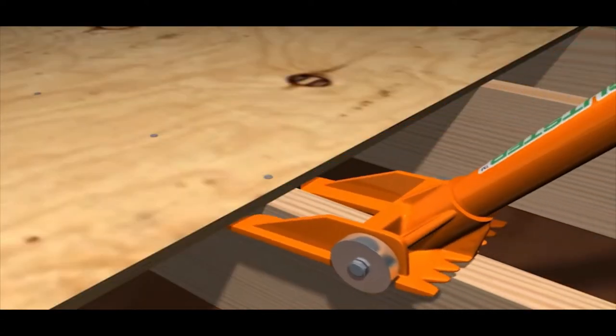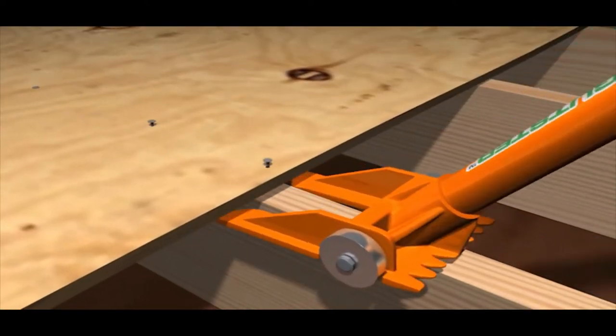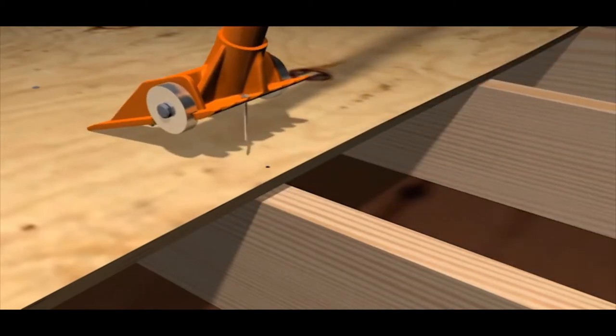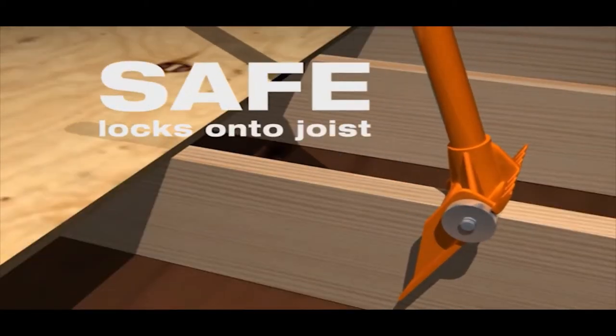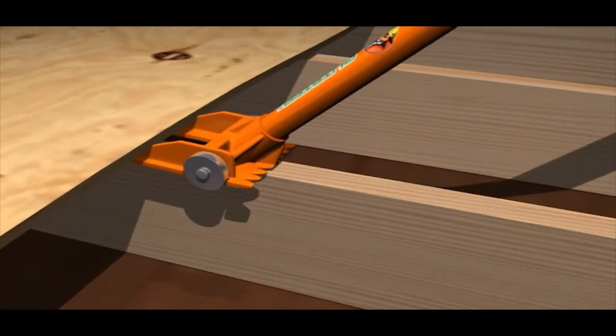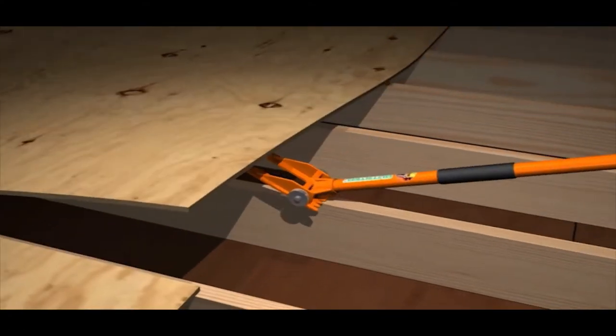Its built-in multi nail puller eliminates the need to switch tools mid-job. Its all-steel construction handles multiple layers of sheets, plywood boards, and metal roofing. The Guster's angled lift plates give you the leverage you need to pry off flooring and roofing with ease.